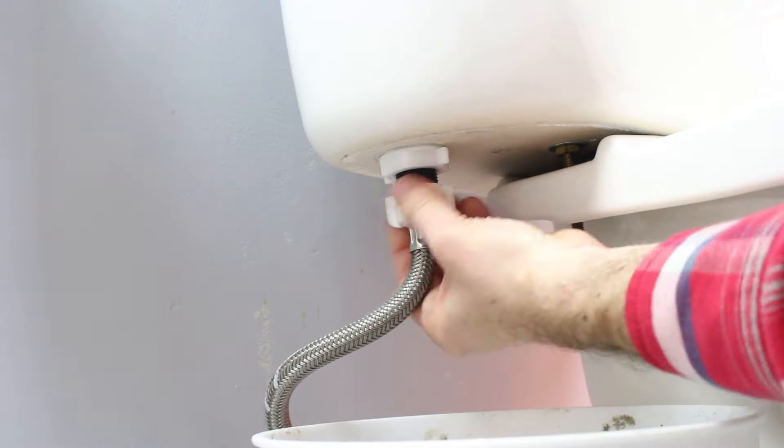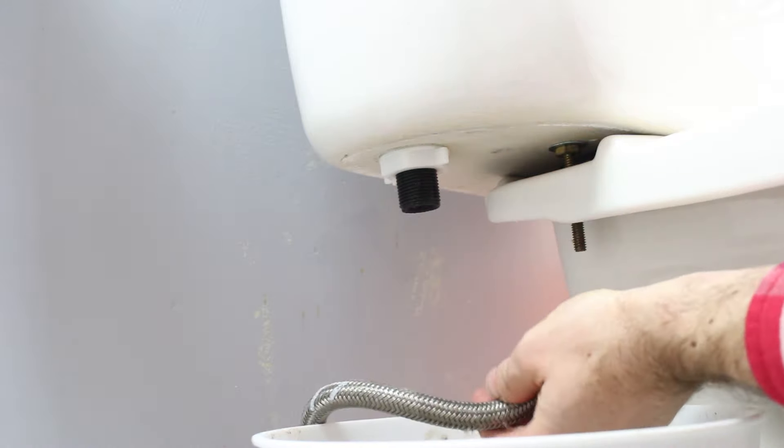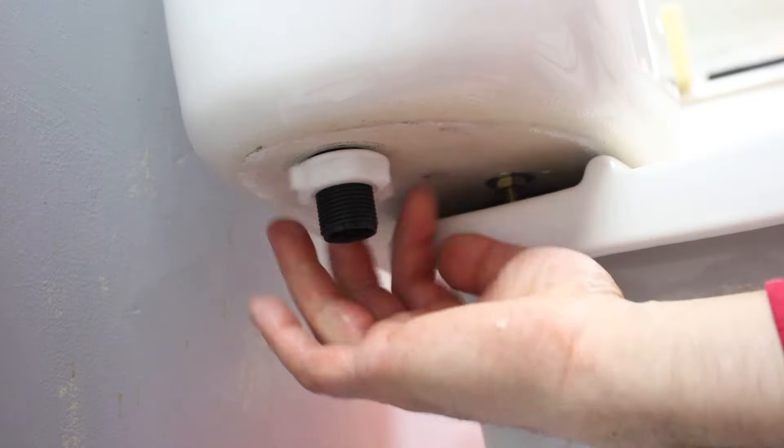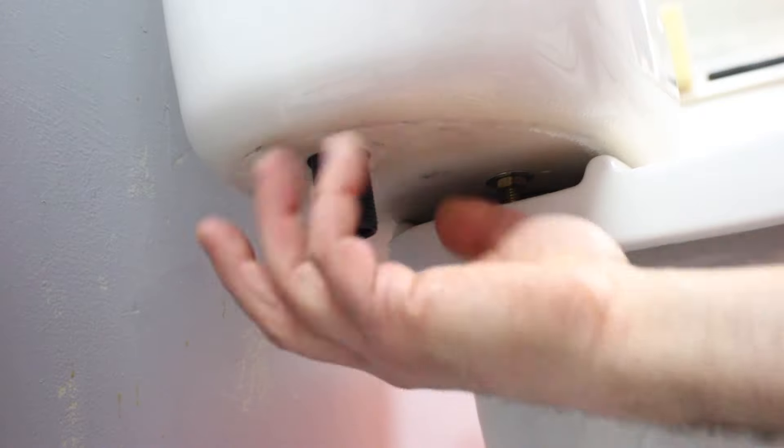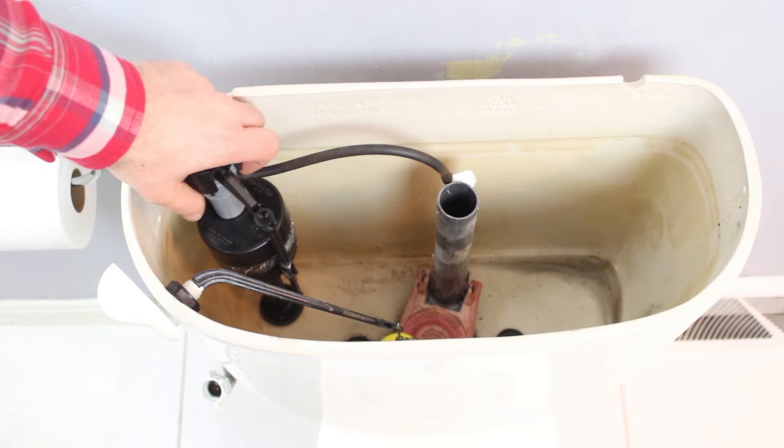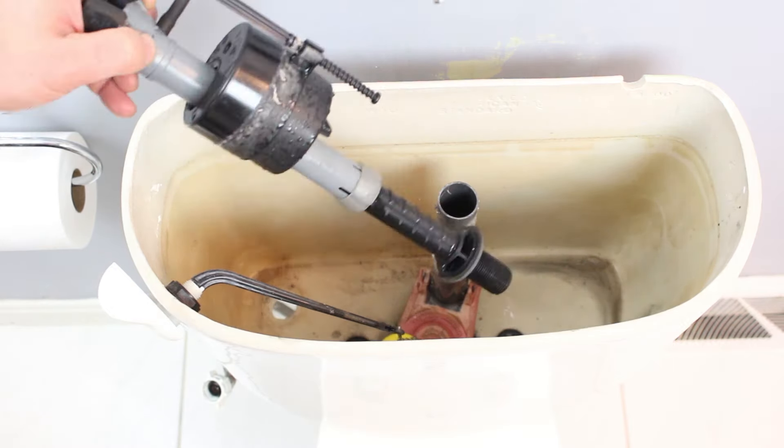Then remove the water supply line that's connected to the old fill valve, and it's good to have a bucket for this. Remove the nut from the old fill valve, and then take off the hose and remove the fill valve from the toilet tank.